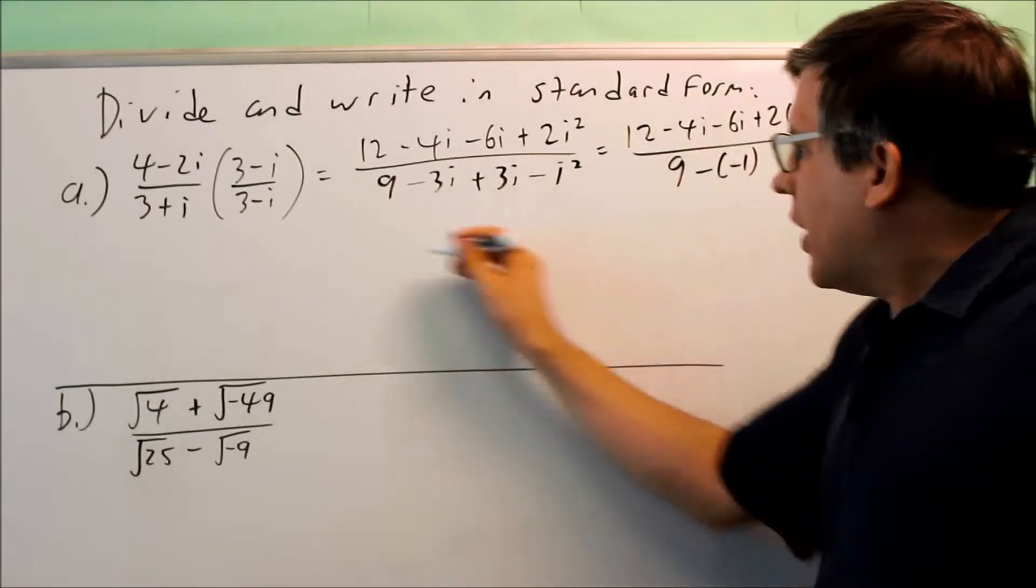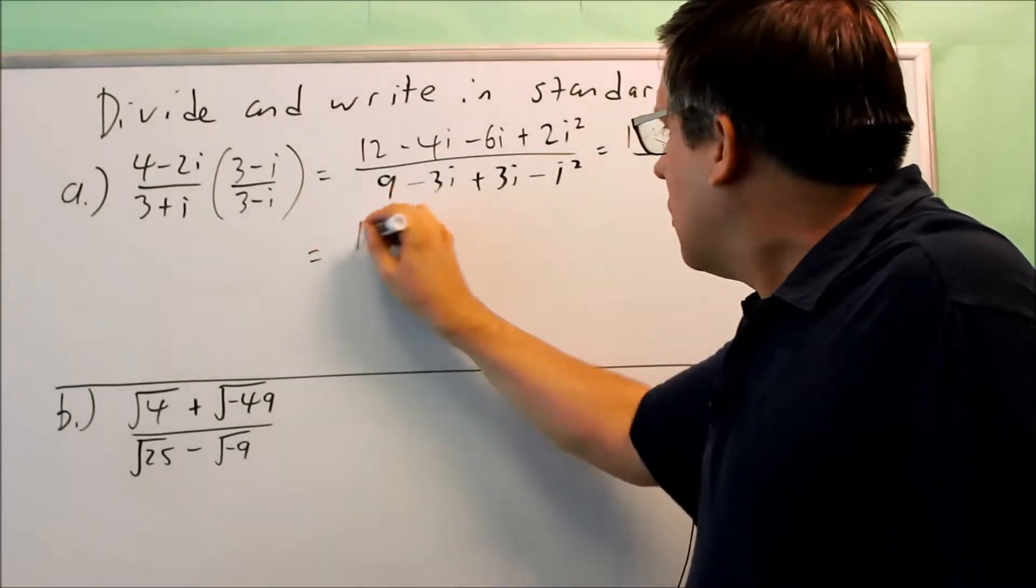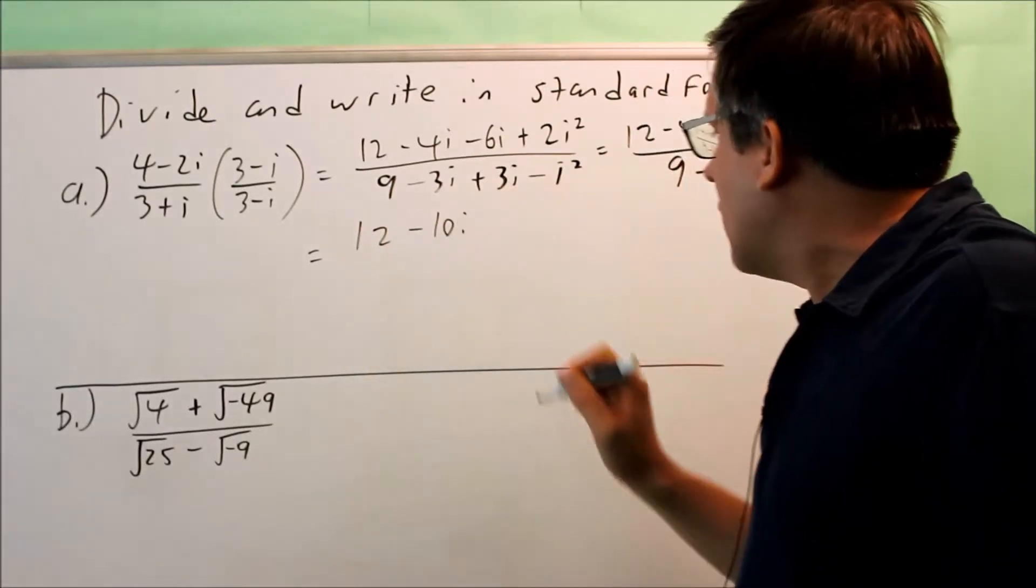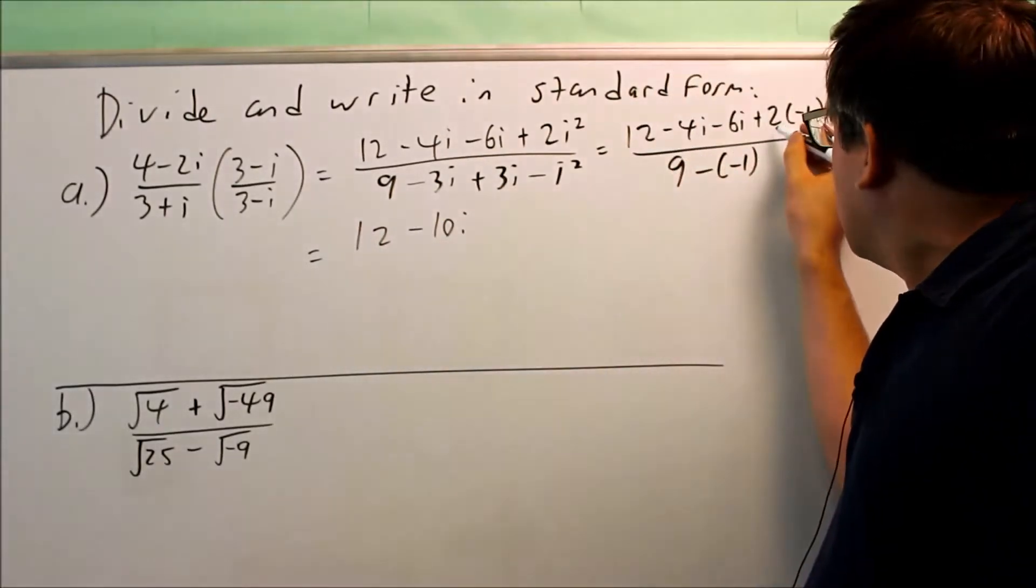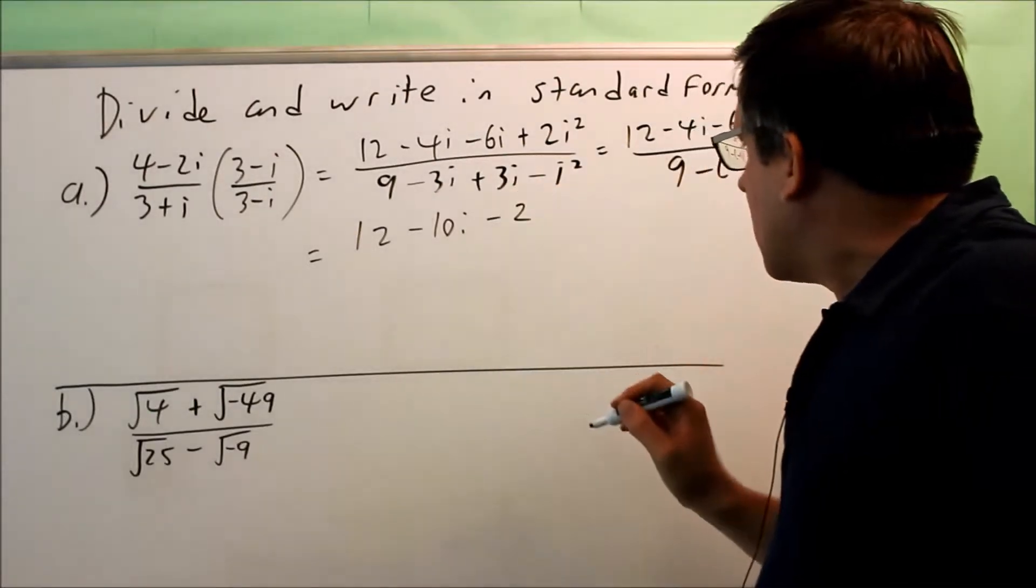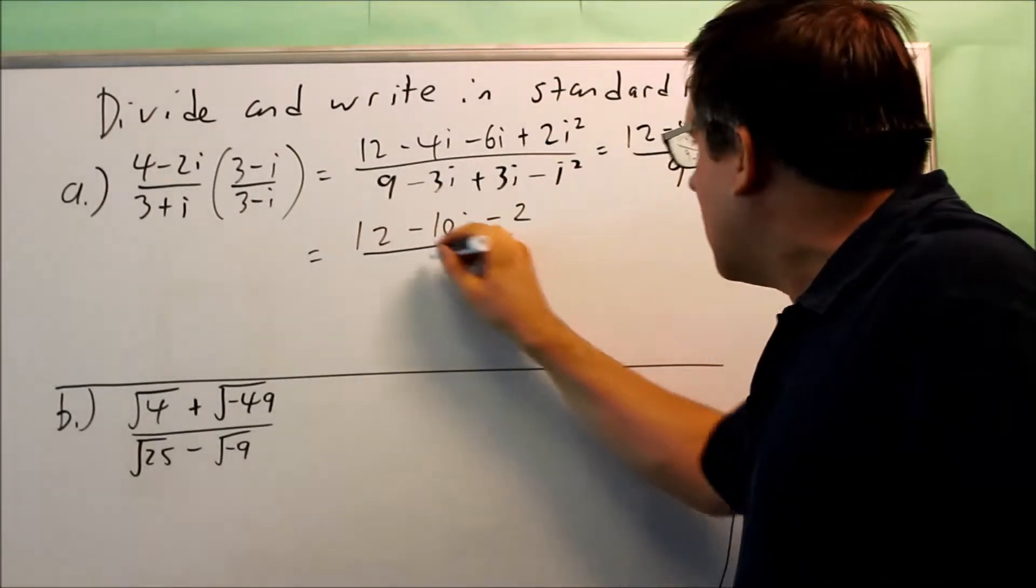Now we're going to simplify what's left. So I get 12. This will be minus 10i. And then I get minus 2 is what that simplifies to. And the bottom, I get 10.